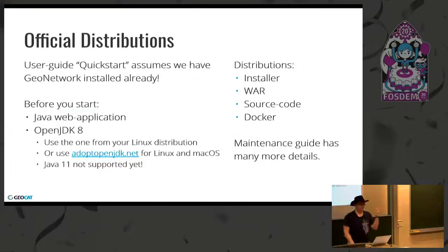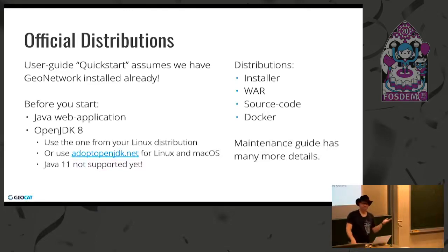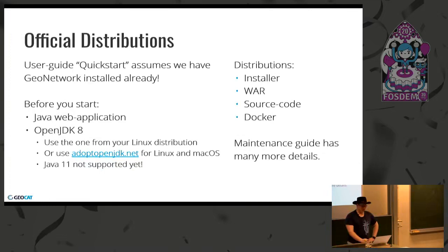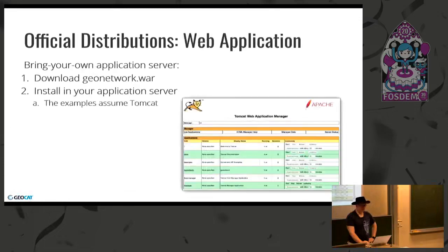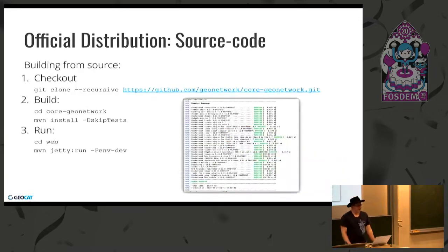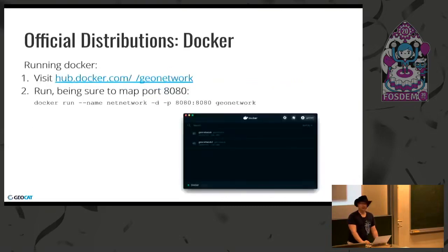Installation and setup: the quick start kind of assumed we already had GeoNetwork. Before we start — it's a Java web app using Java 8; use one from your Linux distribution or AdoptJDK. There are a couple of installation options: an installer, a WAR file, source code, and Docker, though there's no guided documentation on how to use Docker. As I made this presentation I documented it, so I owe the community a pull request after this. There's an amazing installer written in Java — it eventually works. You can also bring your own Tomcat and drop a WAR in, or use the official Docker image.